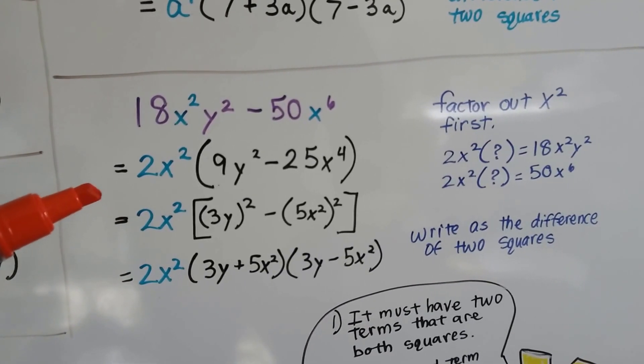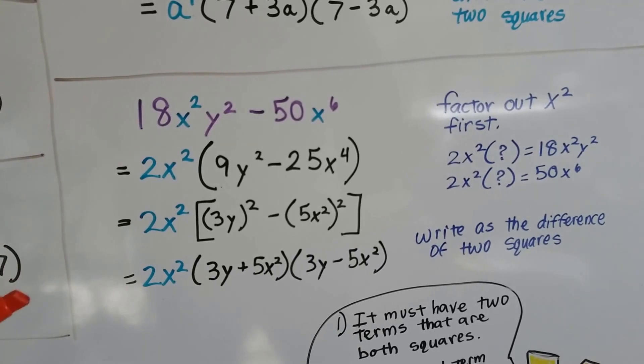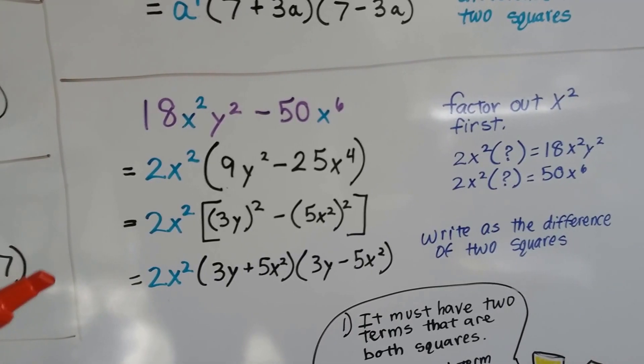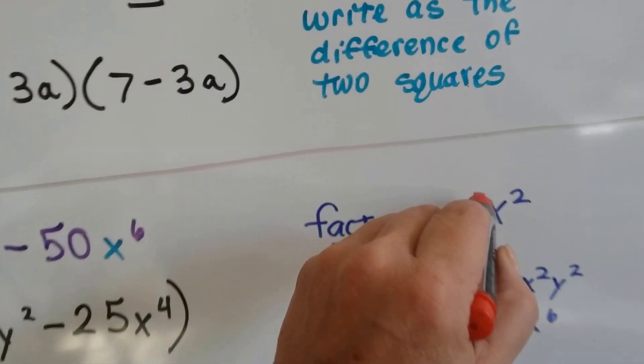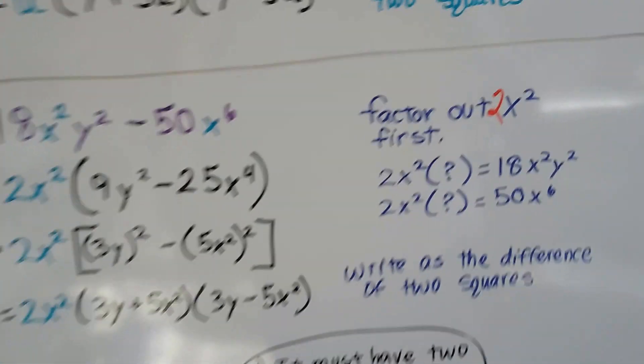So we're going to factor out the 2x² as the first thing we're going to factor out. Whoops! I need a 2 here, don't I? I'm going to factor out 2x² first.